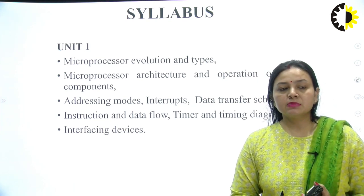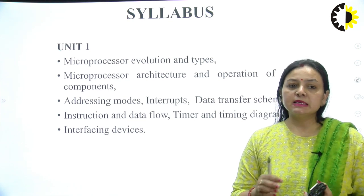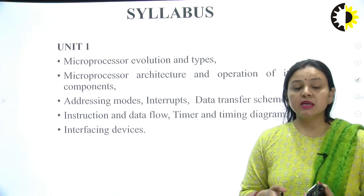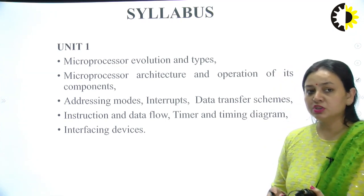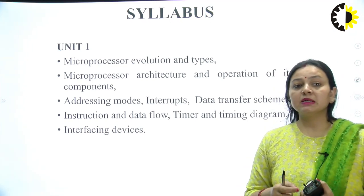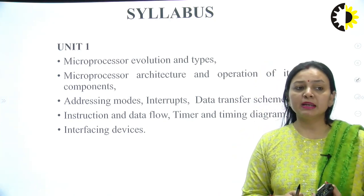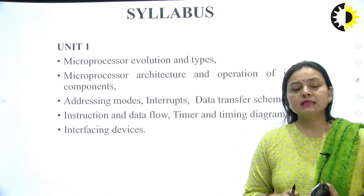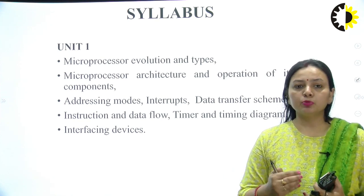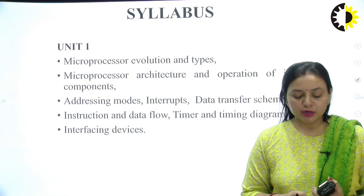The subject is divided into 5 units. Unit 1 talks about the basic introductory part: microprocessor evolution and its types, microprocessor architecture and operation of its components, addressing modes, interrupts, data transfer schemes, instruction and data flow, timer and timing diagrams, and some interfacing devices required to connect any input or output device with the processor, being 8085 or 8086.